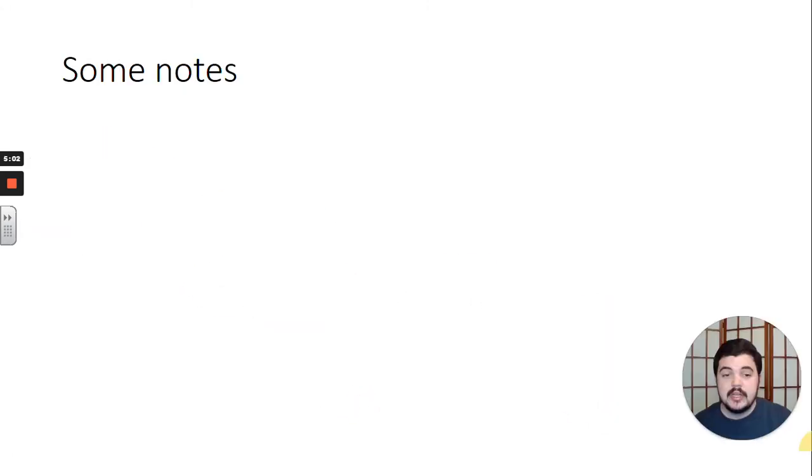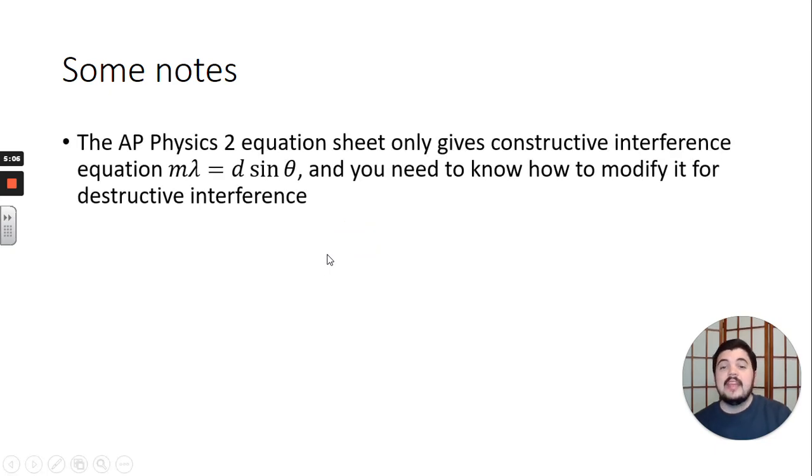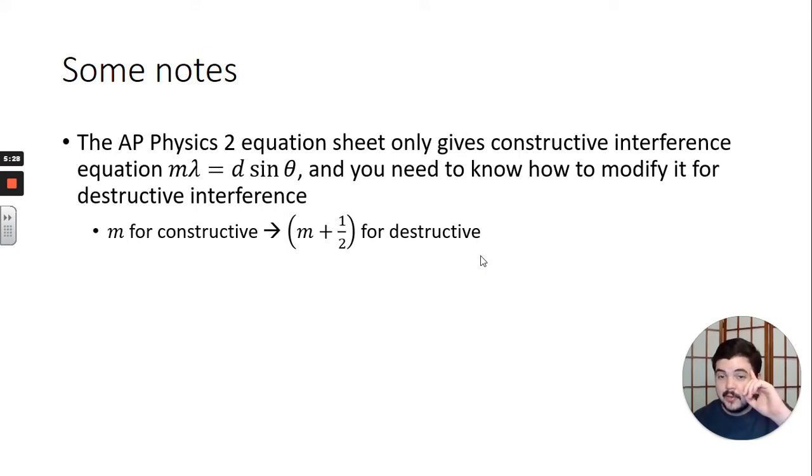Some notes on that equation. The AP Physics 2 equation sheet only gives you the constructive interference equation m times lambda equals d sine theta. It is your job to know how to modify this equation for destructive interference. You replace the m with m plus one half. There's how you go from constructive to destructive. You need to know that.